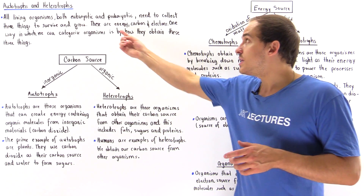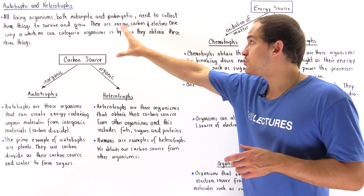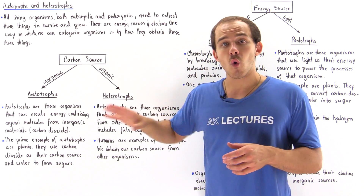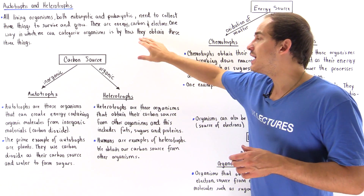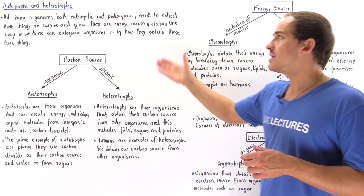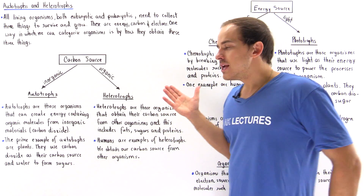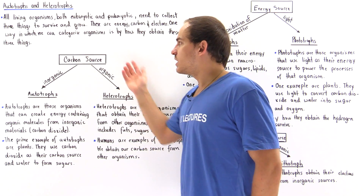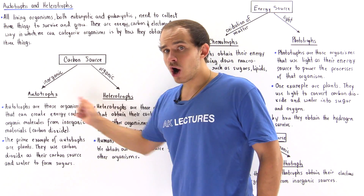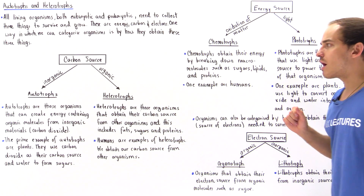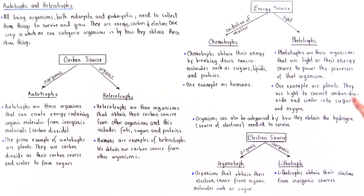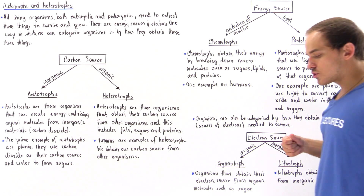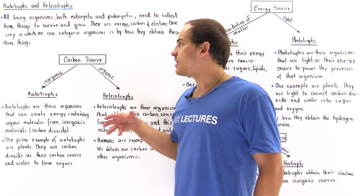Because energy, carbon, and electrons are needed by all organisms, we can categorize organisms by how they actually obtain these three things. We can categorize organisms by how they obtain their carbon source, by how they obtain their energy source, and by how they obtain their electron source. So let's begin with carbon.